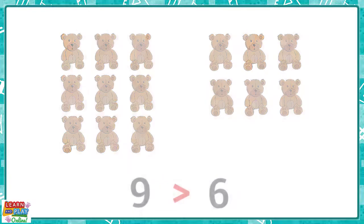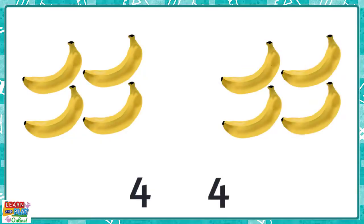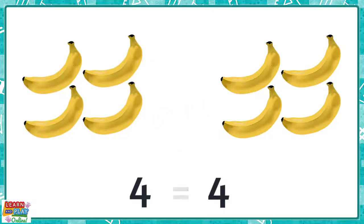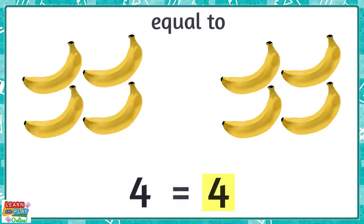Have a go with this next question. Over here we have four bananas and over here we have another four bananas. Which symbol would you use now? There are the same amount of bananas on each side, so we use this symbol, which means equal to. We use this symbol when the numbers are of equal value, and we would read the number sentence as four is equal to four.